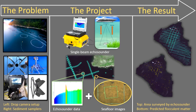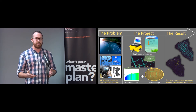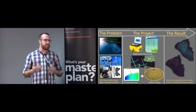Single-beam echo sounders are a potential alternative because they can survey larger areas faster than collecting sediment or underwater video. An echo sounder works by emitting a ping and listening for its return. The time it takes for the signal to return and the strength of the signal are both characteristics that we can use to identify objects in the water. So the question I had was: could we use data from an echo sounder to detect and discriminate flocculent matter from other substrates like boulders or sand? Could we use sound to detect pollution on the seafloor?